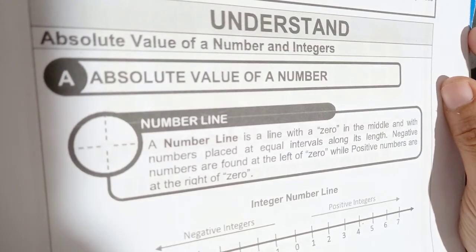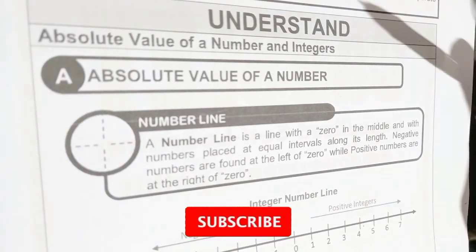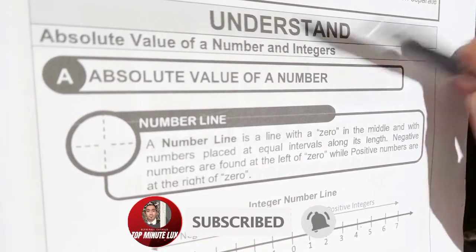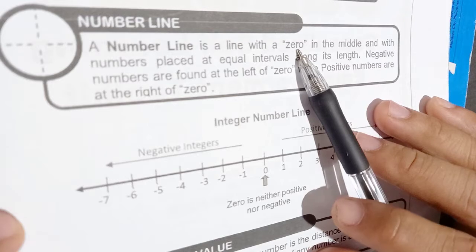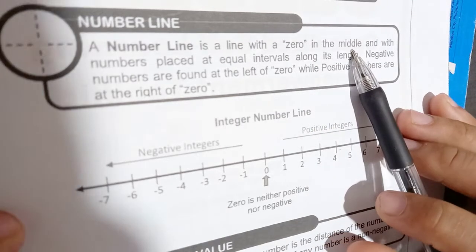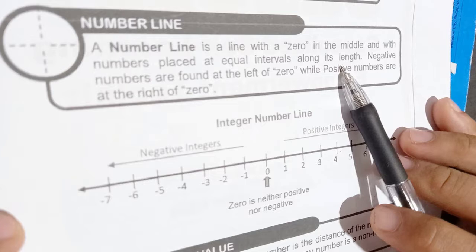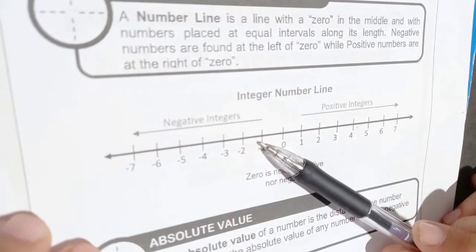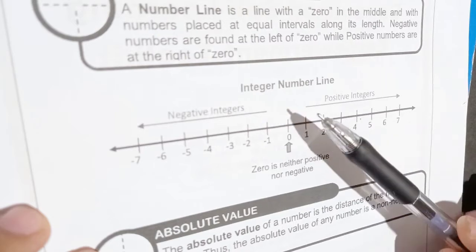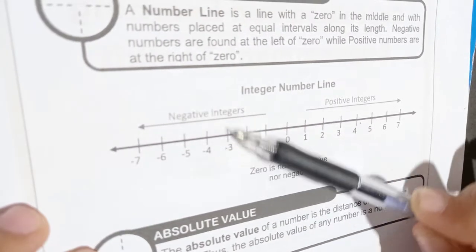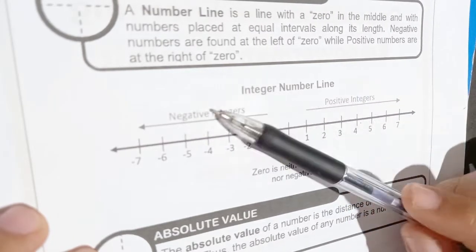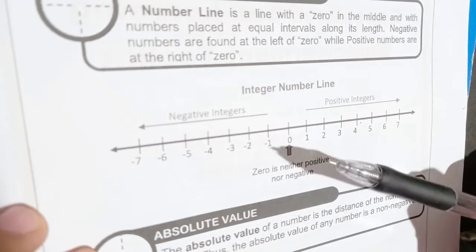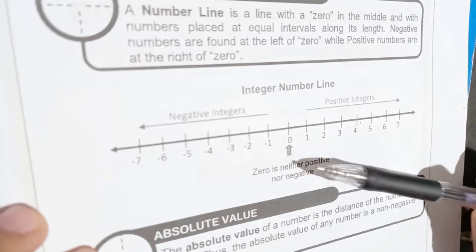Math 7, Quarter 1, Week 3. The lesson is about the absolute value of a number. The foundation of this lesson is the number line — a line with zero in the middle, with numbers placed at equal intervals along its length. On an integer number line, these are all negative integers and these are all positive integers, with zero in the middle. Zero is not positive and also not negative.